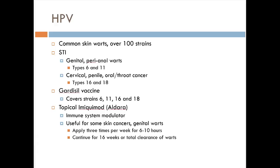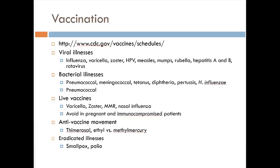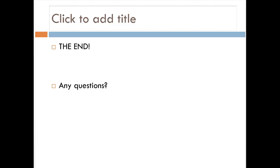HPV — no test questions on this. The Gardasil vaccine targets HPV types 6, 11, 16, and 18, which are responsible for genital warts and cancers of the cervix, penis, and oral throat. There's a topical drug that works as well. Vaccines in general are good — they don't cause autism. More detail on vaccine schedules will come during the pediatrics lecture.